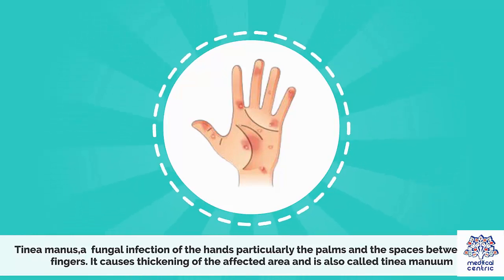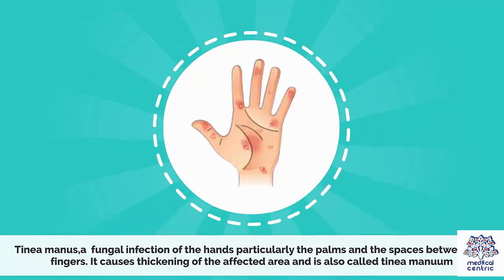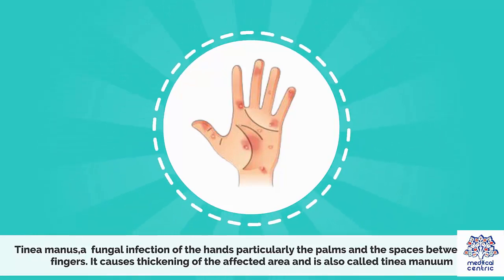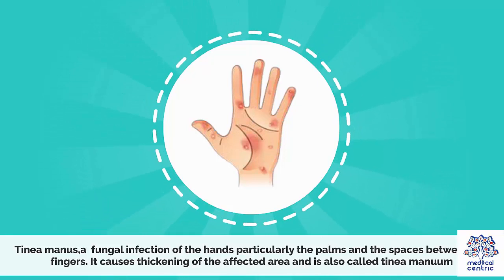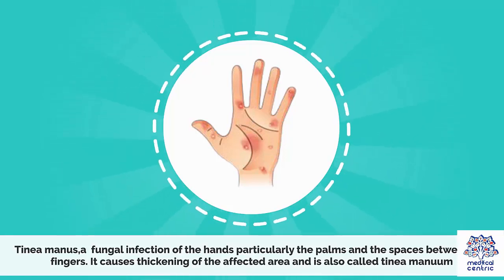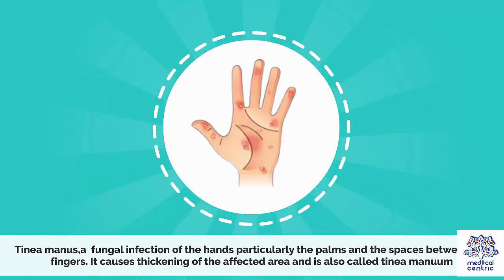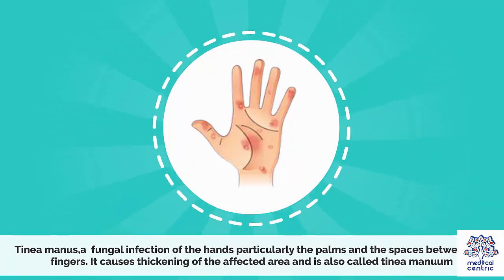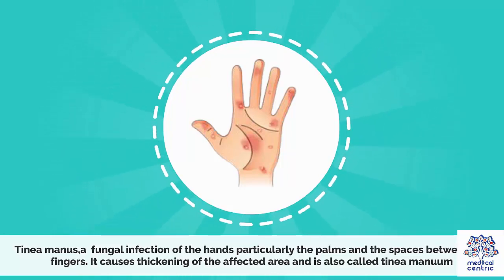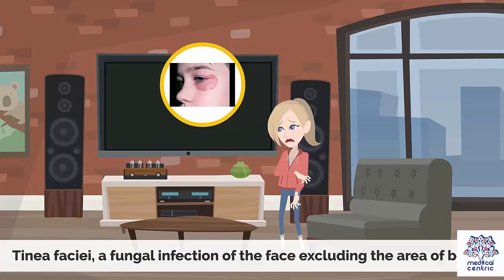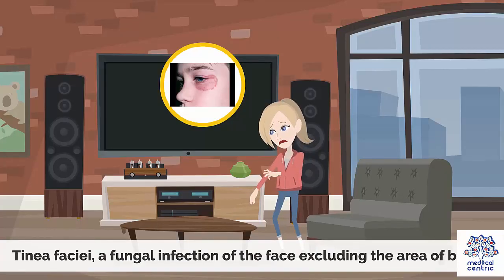Tinea manum is a fungal infection of the hands, particularly the palms and the spaces between the fingers. It causes thickening of the affected area and is also called tinea manuum. Tinea faciei is a fungal infection of the face, excluding the area of the beard.